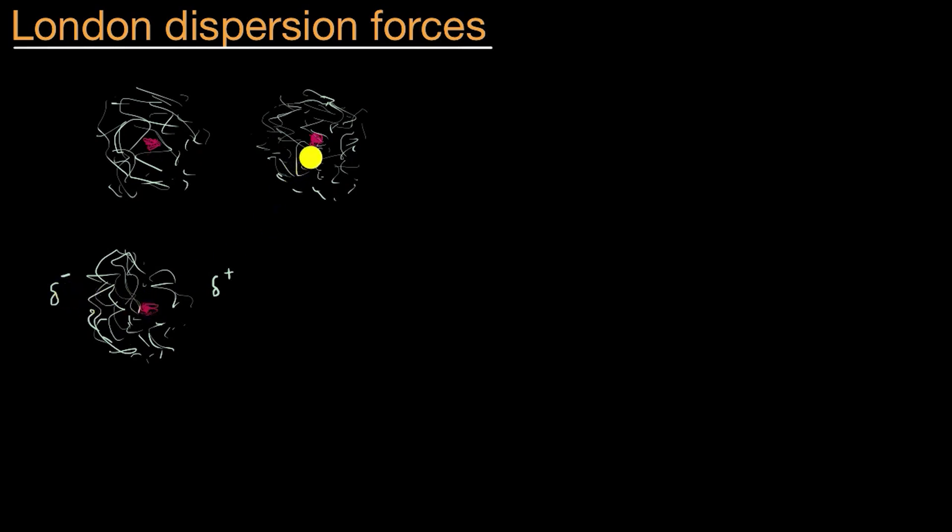Now what might this induce in the neighboring atom? Well, we know that like charges repel each other and opposite charges attract each other. So if we have a partial positive charge out here on the right side of this left atom, well then the negative electrons might be attracted to it in this right atom. So these electrons here might actually be pulled a little bit to the left. So now you'll have a partial negative charge on the left side of this atom, and then a partial positive charge on the right side of it.